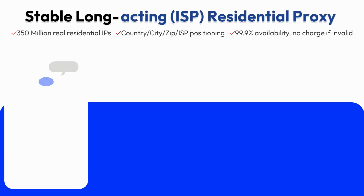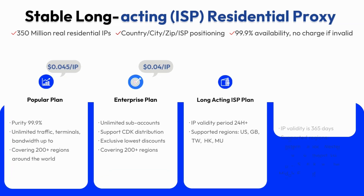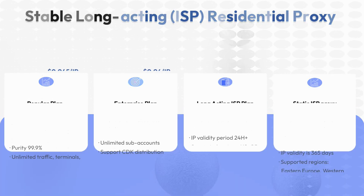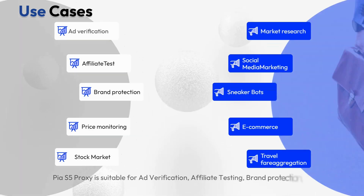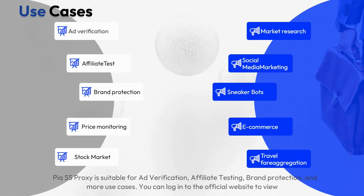Currently there are three plans: popular plan, enterprise plan, and long-acting ISP plan with static ISP proxy. PIA S5 Proxy is suitable for ad verification, affiliate testing, brand protection, and more use cases.